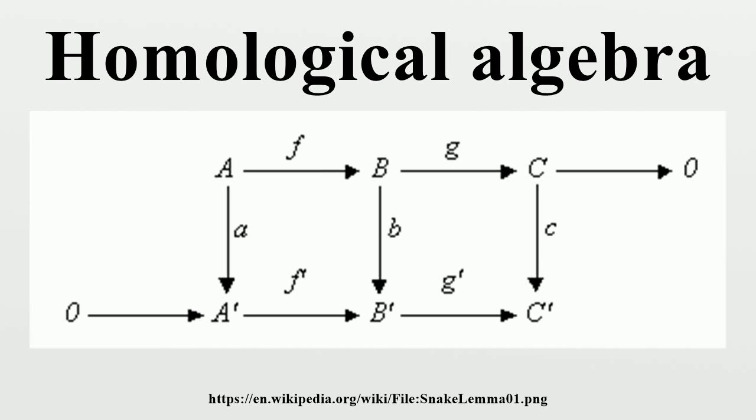Chain complexes in homology: the chain complex is the central notion of homological algebra. It is a sequence of abelian groups and group homomorphisms, with the property that the composition of any two consecutive maps is zero. The elements of C_N are called chains and the homomorphisms D_N are called the boundary maps or differentials. The chain groups C_N may be endowed with extra structure; for example, they may be vector spaces or modules over a fixed ring R.